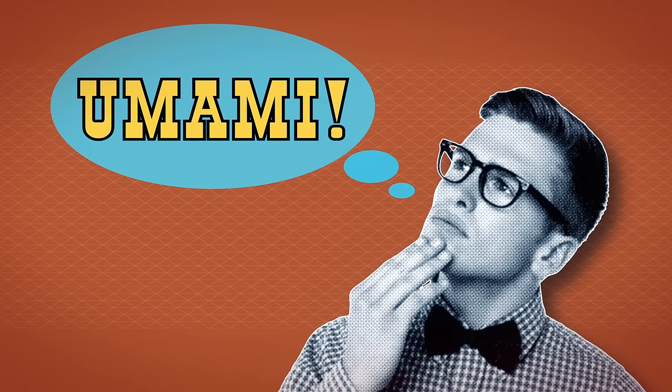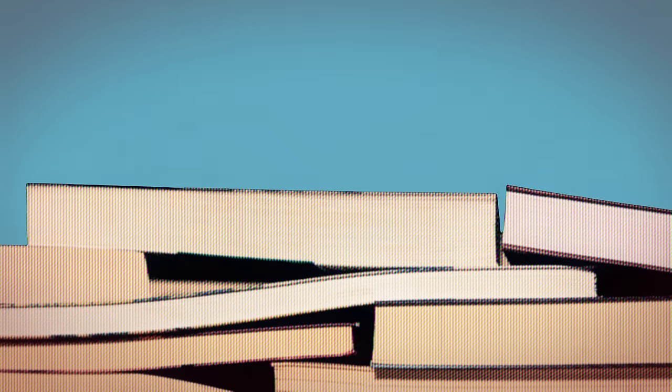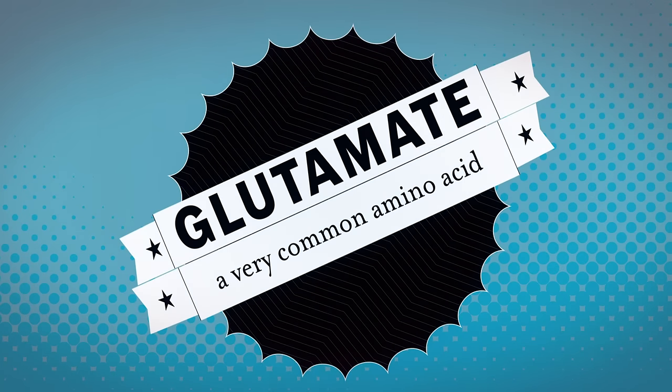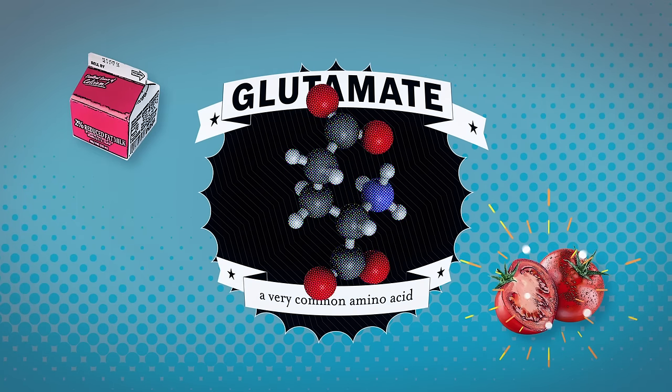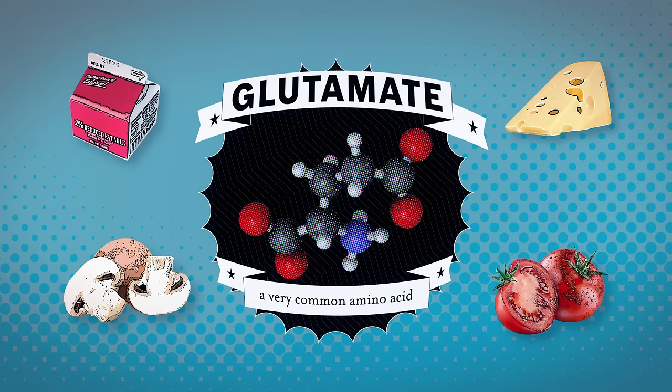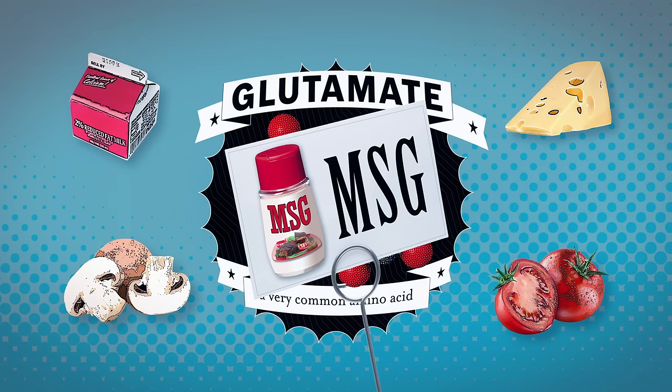So where did this umami come from? The backstory is quite simple. It begins with glutamate, an amino acid that's found in many foods. Including milk and tomatoes and mushrooms and cheese and MSG. More about that later.